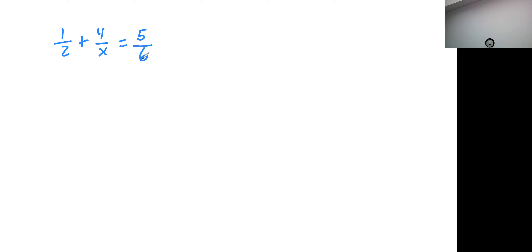The idea is let's get rid of all the fractions. Our strategy in this case is we need to find a common denominator. You look at these three denominators: 2, x, and 6. What would be the common denominator? Well, 2 goes into 6 three times, so 6 and x would be our common denominator.